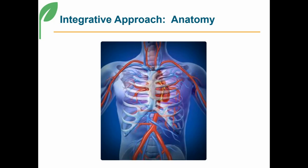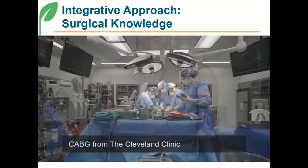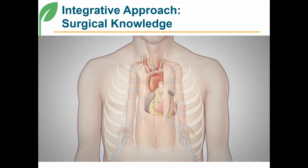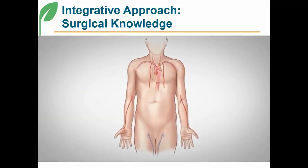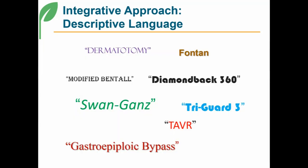PCS coding requires a detailed understanding of anatomy, often in greater detail than that needed for CM or CBT coding. The official guidelines, rules, and definitions are the law, which govern what we can and cannot code. In-depth surgical knowledge is essential. Coders need to understand the specifics of how a surgical procedure is performed.